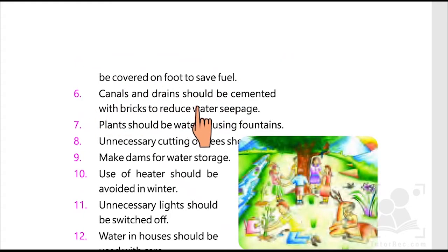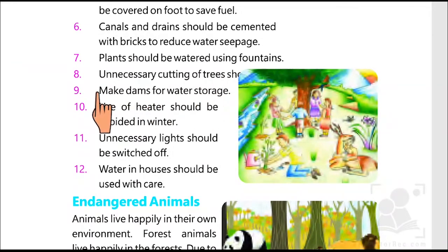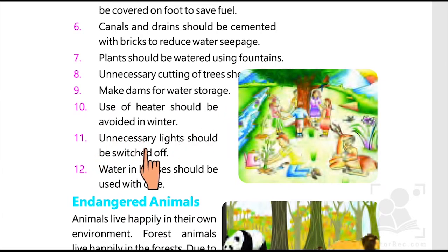Canals and drains should be cemented with bricks to reduce water seepage. Plants should be watered using fountains. Unnecessary cutting of trees should be stopped. Make dams for water shortage. Use of heaters should be avoided in winter. Unnecessary lights should be switched off. Water in houses should be used with care. These are the 12 common ways to save and conserve the natural resources.